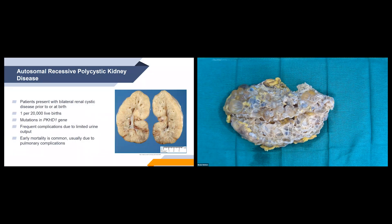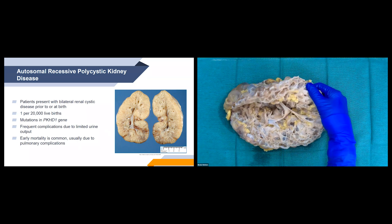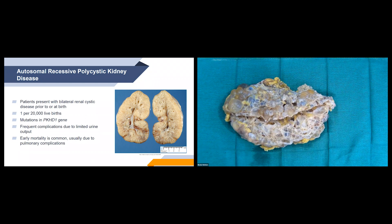Now we're moving on to autosomal recessive polycystic kidney disease. This is also a hereditary disorder characterized by bilateral renal cysts that typically present prior to or at birth. These cysts are much smaller than those seen in ADPKD and typically form more of a radial ray appearance, perpendicular to the cortex, giving the kidney a sponge-like appearance. This disease occurs in about one per 20,000 live births and is due to mutation of the PKHD1 gene.